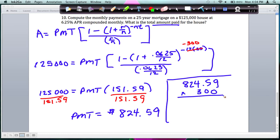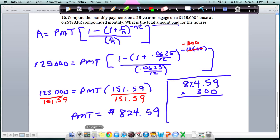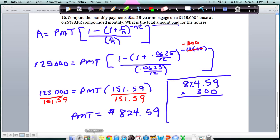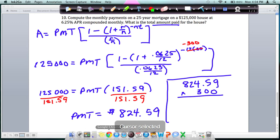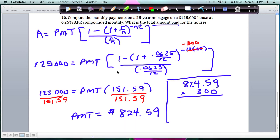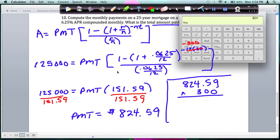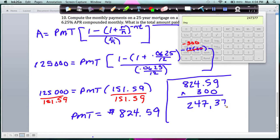So you just multiply these on your calculator. Let me select the calculator. And I have 824.59 times 300, and you get, you are paying a total of $247,377 for that $125,000 house.